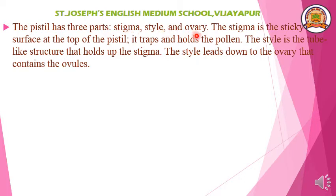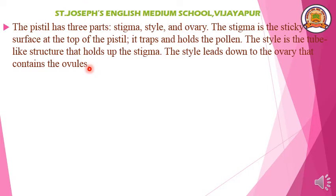The pistil has three parts: stigma, style, and ovary. Stigma is the sticky surface at the top of the pistil — it traps and holds the pollen grain because it is little sticky and gummy in nature. When pollen grains fall on the stigma, it traps and holds them, then sends them into the tube-like structure called the style. The style holds up the stigma and leads down to the ovary. The style is the center part of the pistil, ending with the stigma at the top, and carries pollen grains down to the ovary.